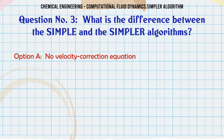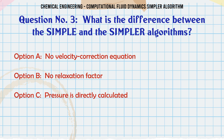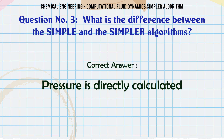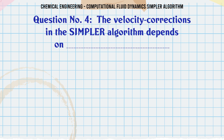What is the difference between the SIMPLE and the SIMPLER algorithms? A. No velocity correction equation, B. No relaxation factor, C. Pressure is directly calculated, D. No pressure correction equation. The correct answer is: Pressure is directly calculated.